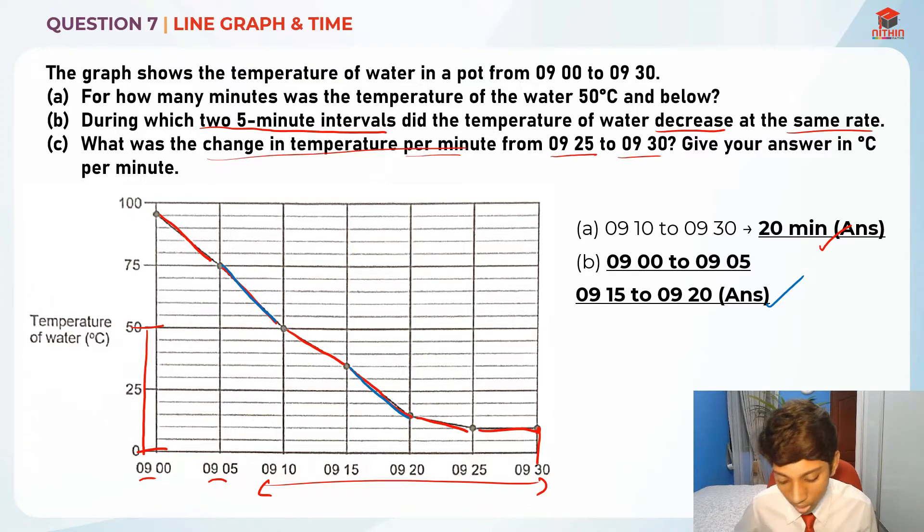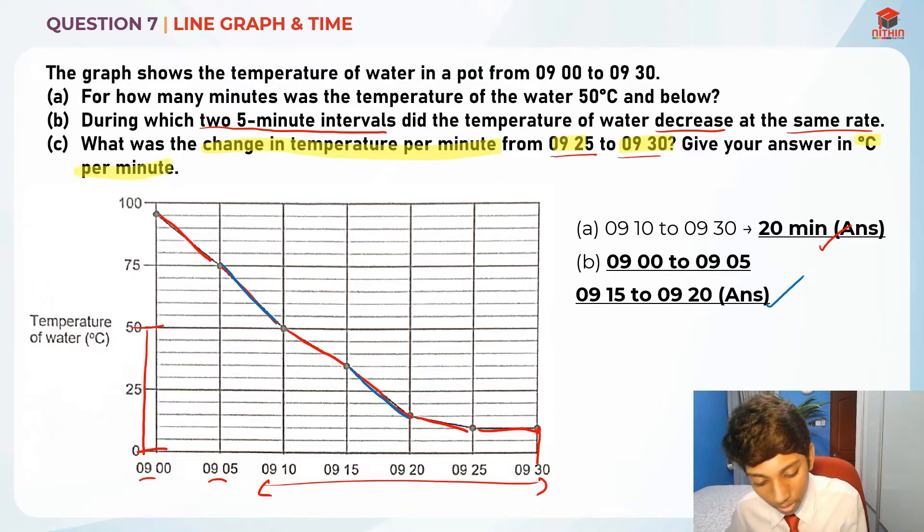Give your answer in degrees Celsius per minute. So 9:25 to 9:30—this was the thing. It was actually constant and there was no change, right? Because it's a straight line.